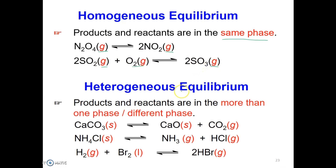Meanwhile, for heterogeneous equilibrium, the products and reactants are in more than one phase — they exist in different phases. For example, calcium carbonate in the solid phase decomposes to form CaO solid plus CO2 gas. Or ammonium chloride, NH4Cl, in the solid phase decomposes to form ammonia gas plus HCl gas.